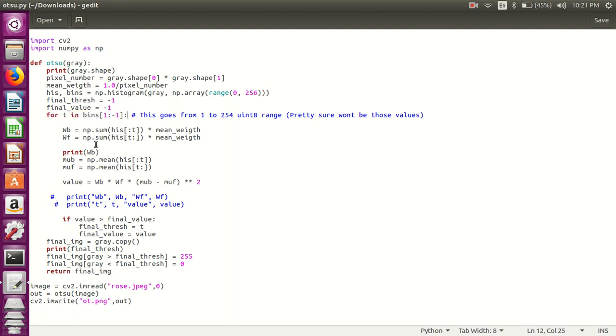We calculate the variable using this formula, and thus we get the value. If this value is known as minimum threshold, and if this value is greater than the final_value, then the value of final_thresh and final_value are going to be assigned to t and value respectively.